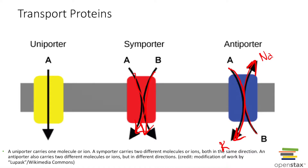So those are the different types of transport proteins: uniporters move one thing; symporters and antiporters are co-transporters that move two different things. If they move in the same direction, they're symporters; if they move in opposite directions, they're antiporters.